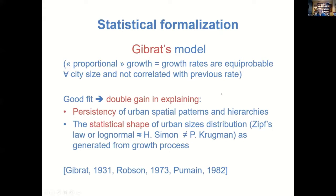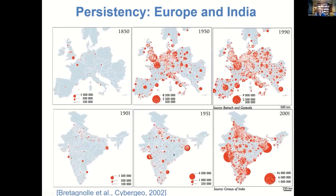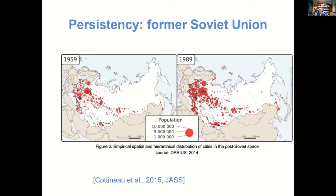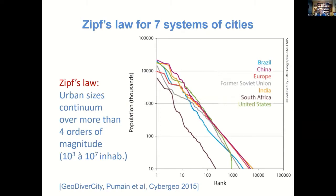A long time ago, in the 1930s, a model was suggested to summarize this growth process: the Gibrat stochastic model, leading to a normal distribution of city size. It is interesting because it explains why the spatial and temporal pattern of city size are so robust over time, as you may see on those maps showing the size of cities in Europe over more than one century, and in India as well. The spatial pattern remains rather stable; also the population of cities is growing exponentially. The same holds for different urban systems, including the former Soviet Union — all those urban systems have the same statistical distribution of city size.